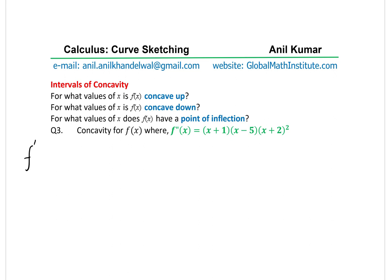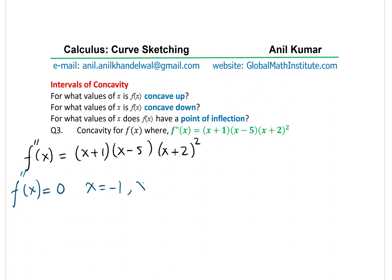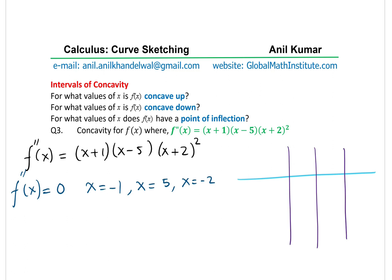For question three, the second derivative is given as f''(x) = (x + 1)(x - 5)(x + 2)². We analyze the critical numbers where f''(x) = 0: these are x = -1, x = 5, and x = -2. On a number line we place these three points: -2, -1, and 5.